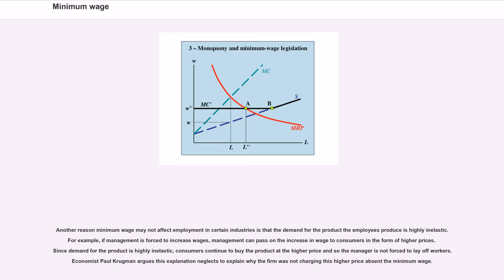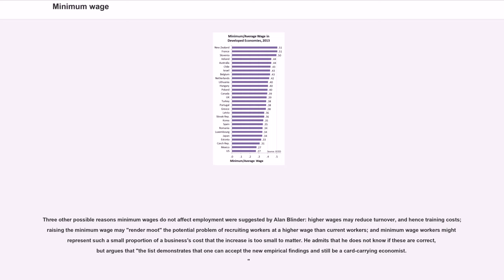Another reason minimum wage may not affect employment in certain industries is that the demand for the product the employees produce is highly inelastic. For example, if management is forced to increase wages, management can pass on the increase in wage to consumers in the form of higher prices. Since demand for the product is highly inelastic, consumers continue to buy the product at the higher price and so the manager is not forced to lay off workers. Economist Paul Krugman argues this explanation neglects to explain why the firm was not charging this higher price absent the minimum wage. Three other possible reasons minimum wages do not affect employment were suggested by Alan Blinder: higher wages may reduce turnover and hence training costs; raising the minimum wage may render moot the potential problem of recruiting workers at a higher wage than current workers; and minimum wage workers might represent such a small proportion of a business's cost that the increase is too small to matter.